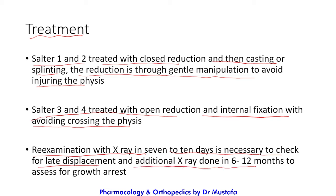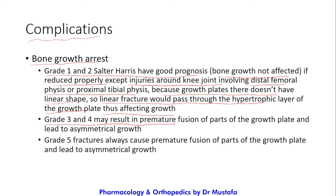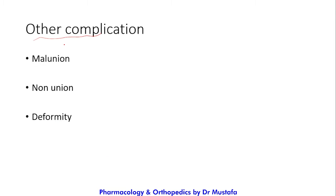Regarding complications: Grade 1 and 2 have good prognosis and bone growth is not affected if reduced properly, except for injuries around the knee joint involving the distal femoral physis or proximal tibial physis, as the growth plates there are not linear in shape. Grade 3 and 4 may result in premature fusion of parts of the growth plate and lead to asymmetrical growth. Grade 5 always causes premature fusion and leads to asymmetrical growth or growth arrest. Other rare complications include malunion, nonunion, and deformity.